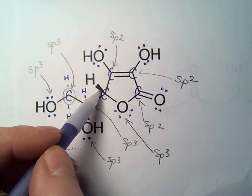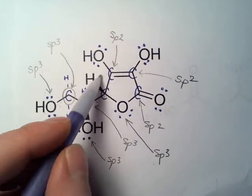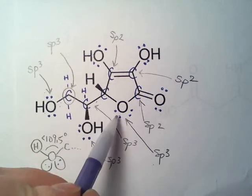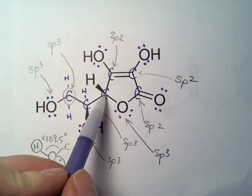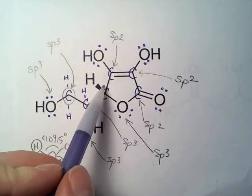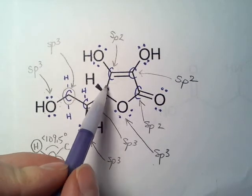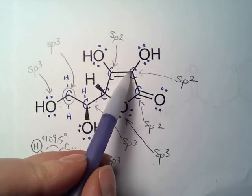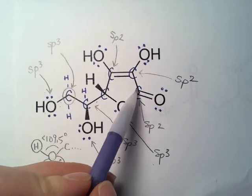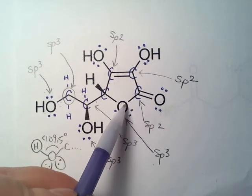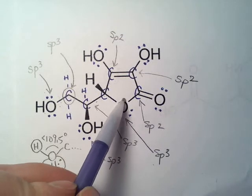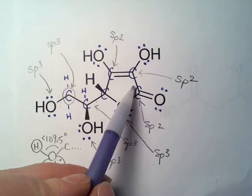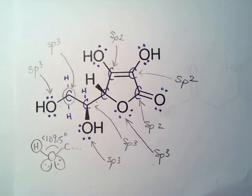Let's go around this ring and just note the molecular geometry. Starting here: tetrahedral, 109.5; trigonal planar, about 120; trigonal planar, about 120; bent, a little less than 109.5. So we draw it with a nice shape, but actually these angles are not the same all the way around.